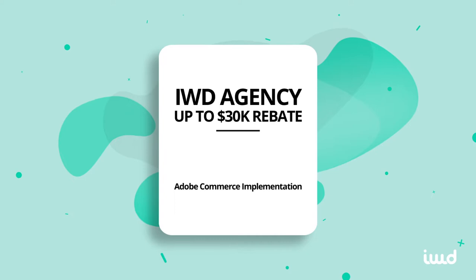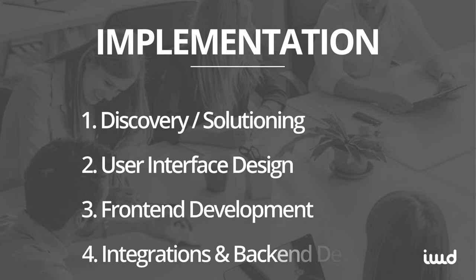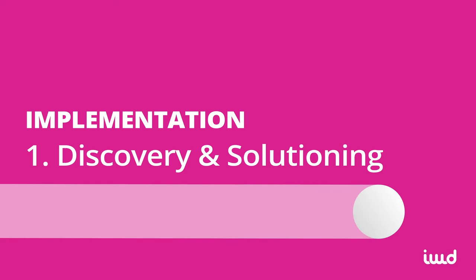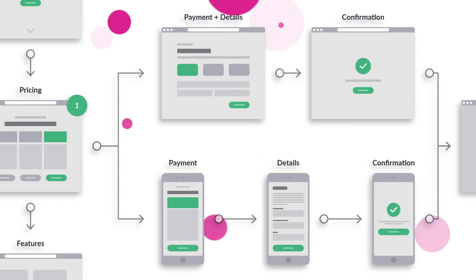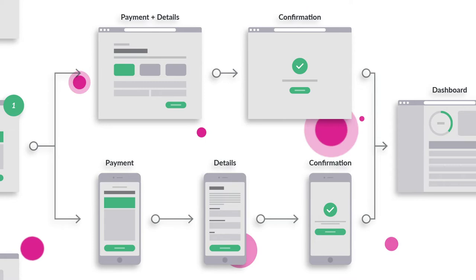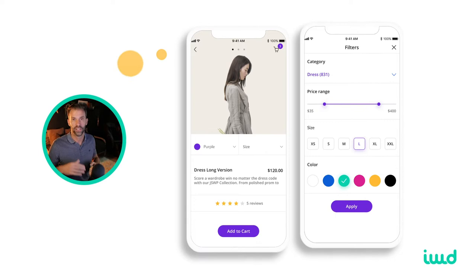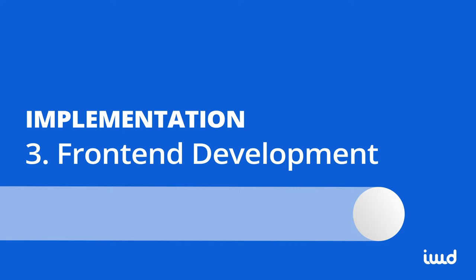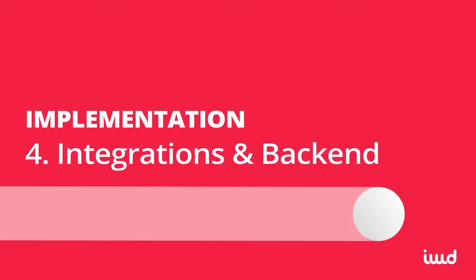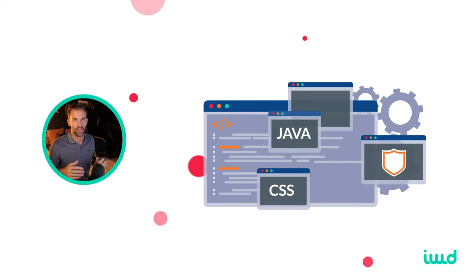The next area is implementation costs. First, you go through a discovery and solutioning phase where you gather all your requirements — a roadmap of your e-commerce system and what features are important. After this, you go through UX/UI design. Once the design is done for desktop, mobile, and all your different devices, you go into front-end development, where developers code the site based on the mock-ups as pixel-perfect as possible. Then you do integrations with your ERP systems and other systems your e-commerce site needs to communicate with. This phase can run concurrently with front-end development to speed up your timeline.